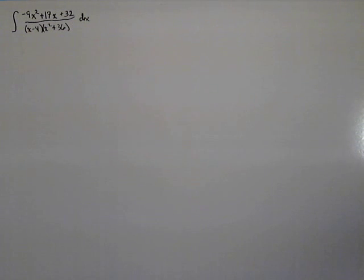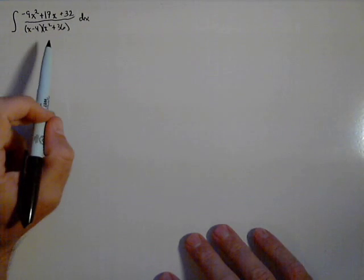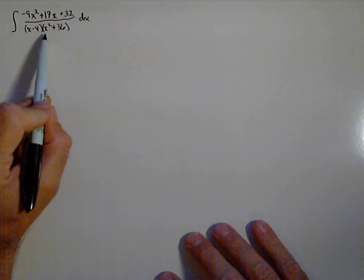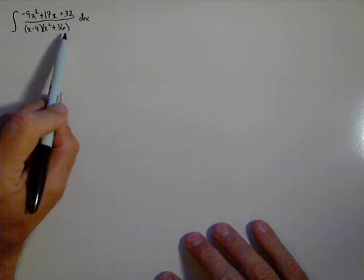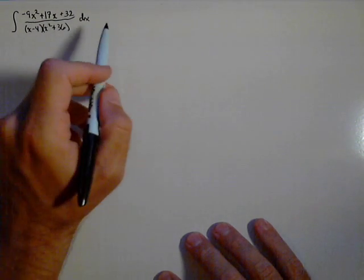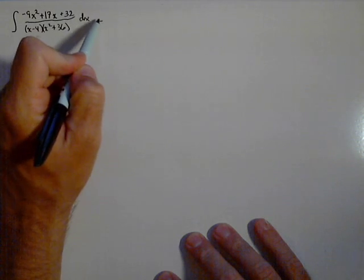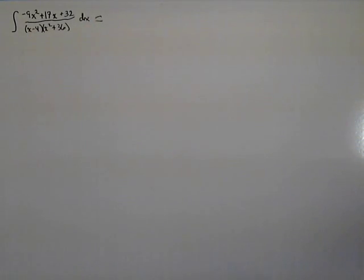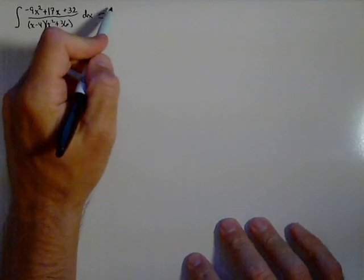In this problem, we're gonna solve this antiderivative by using partial fraction decomposition. Now, we already have the denominator factored into one linear factor and one irreducible quadratic factor. So the way this one is gonna be set up